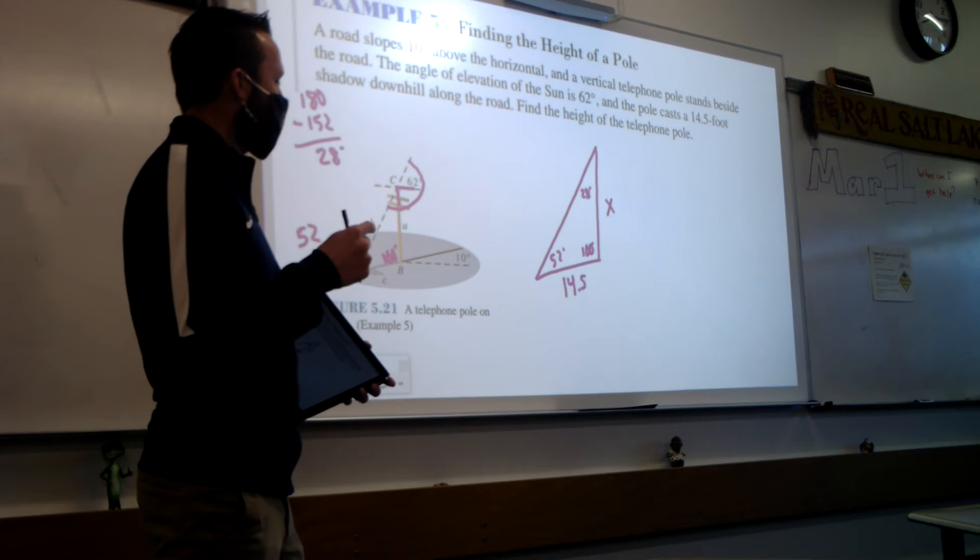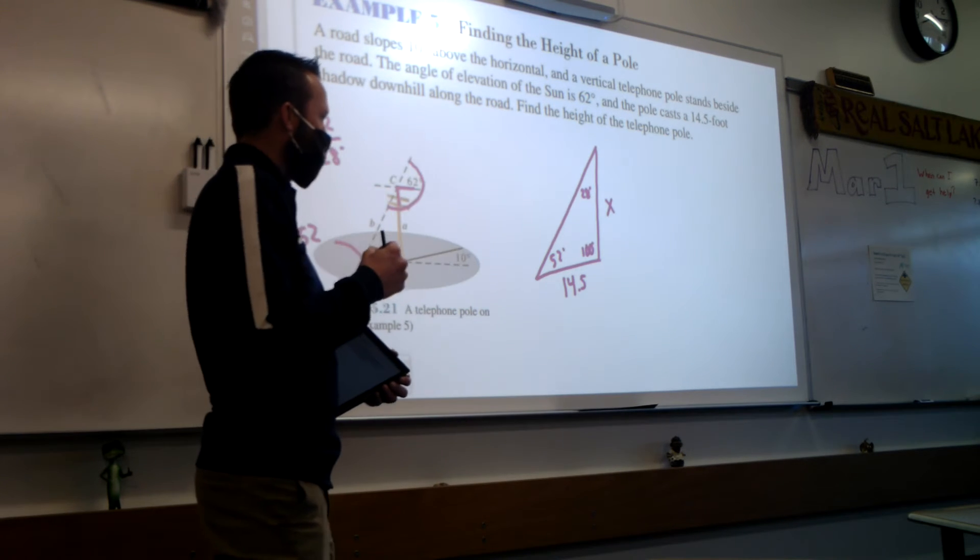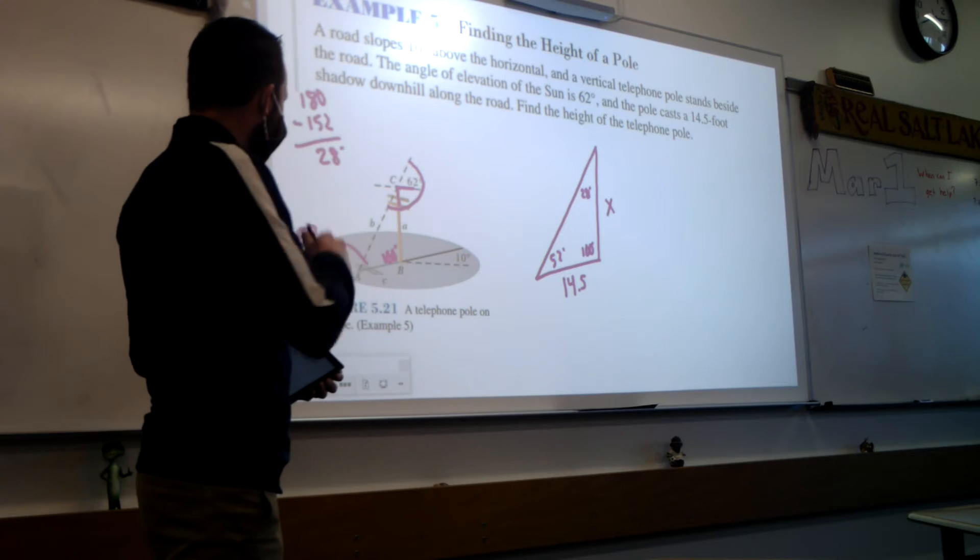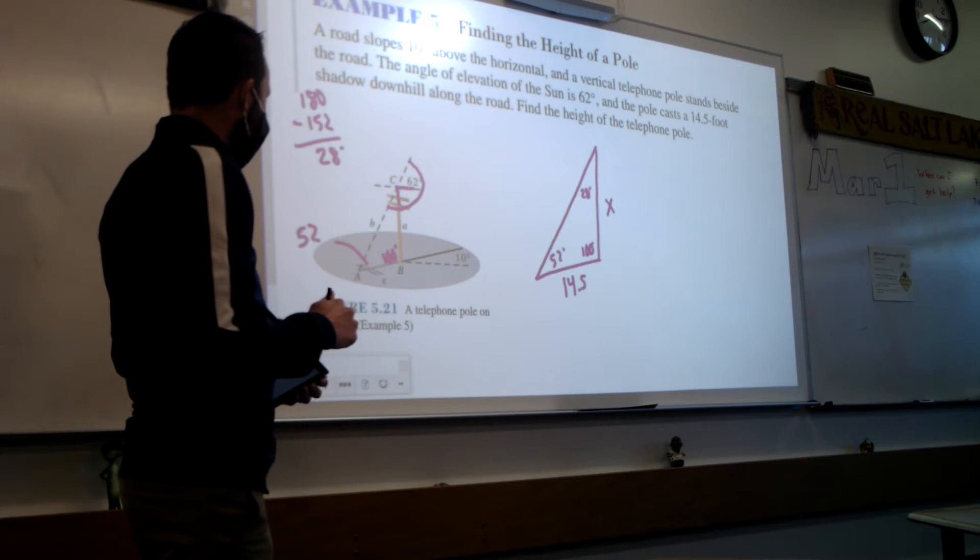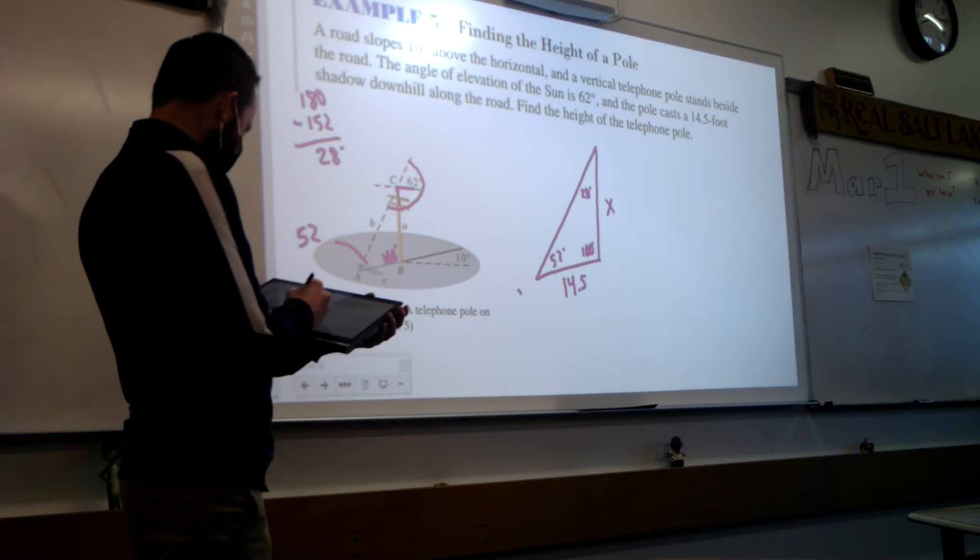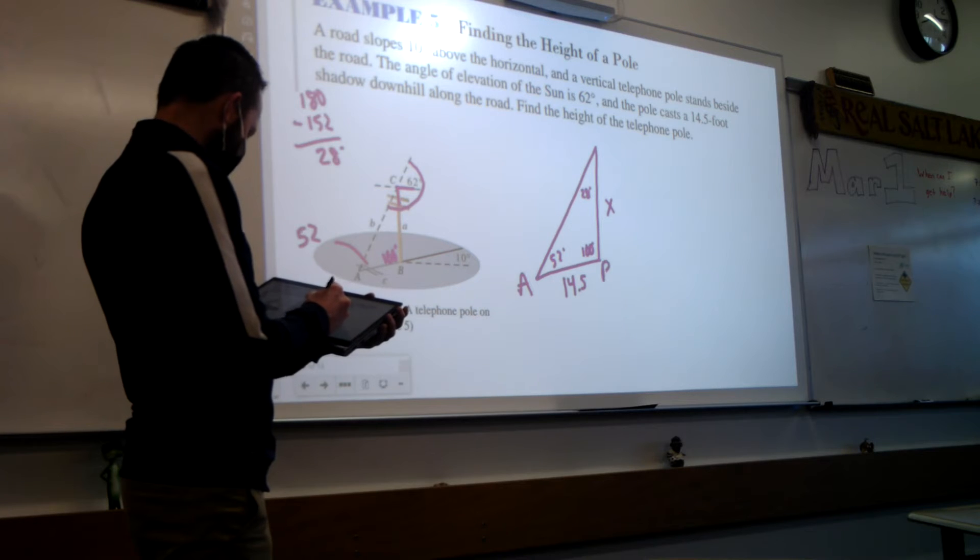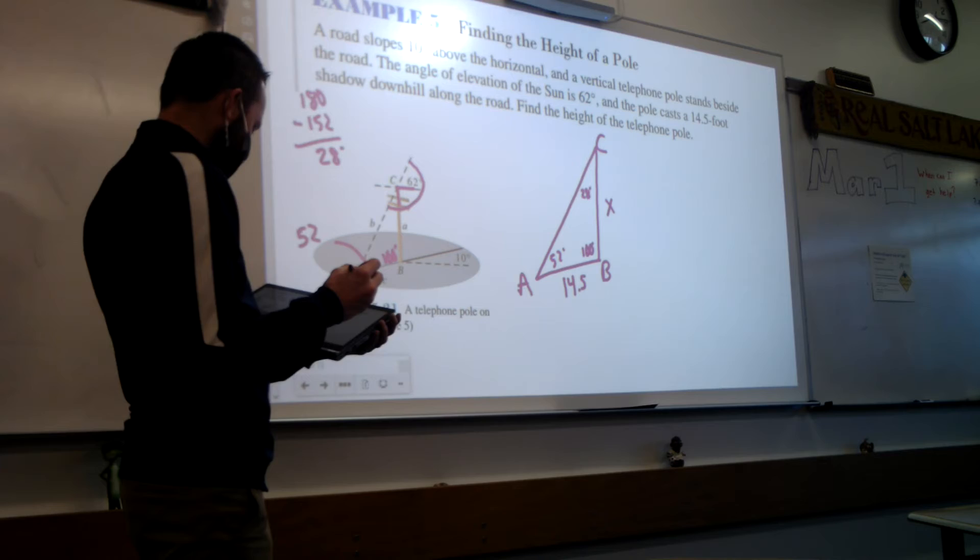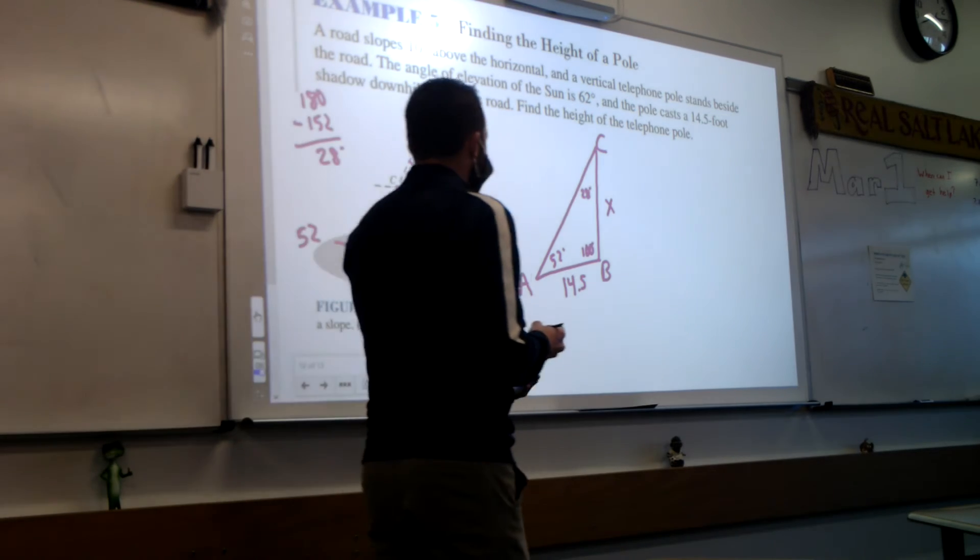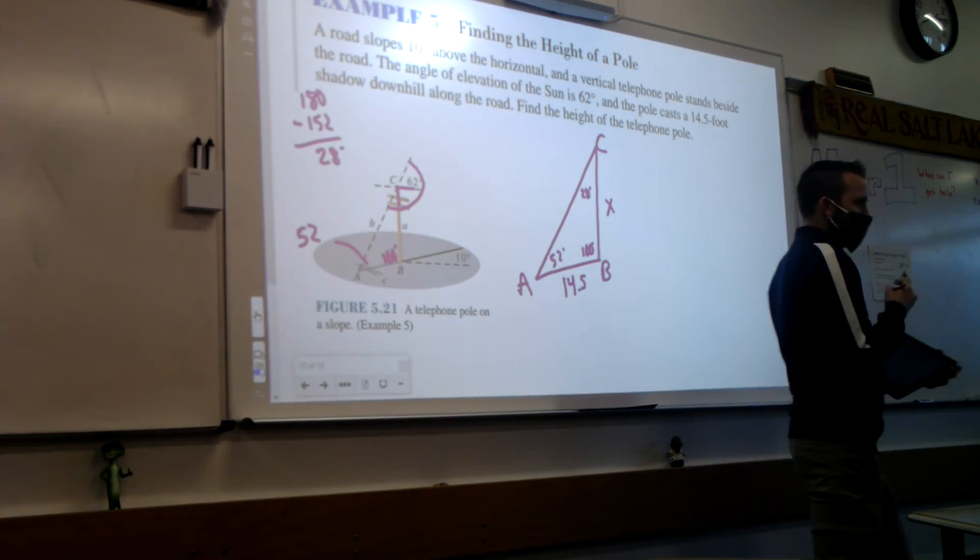Well, so remember, to use law of sines, we need to know the side and angle of a letter. Is there an angle and side combination we know out there? I think if we label it, this is A, this is B, and this is C. So what letter do we know both the side and angle of? C. And which one are we trying to find? A.